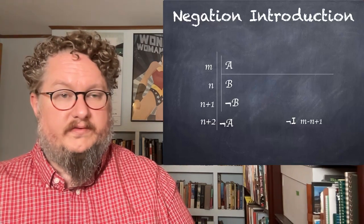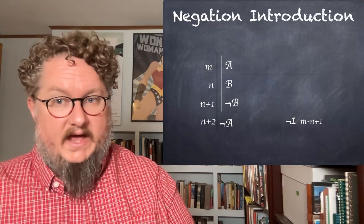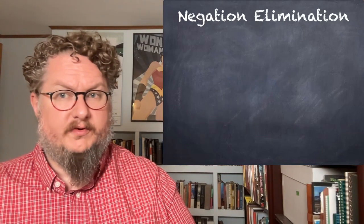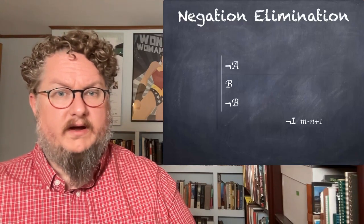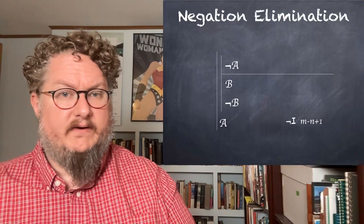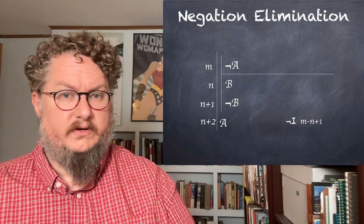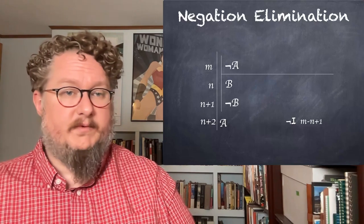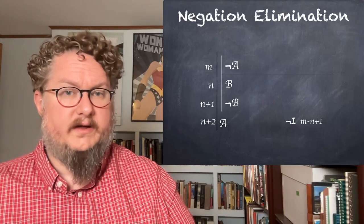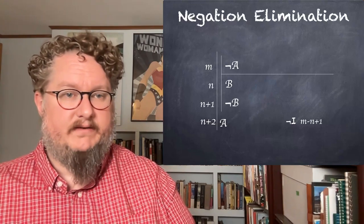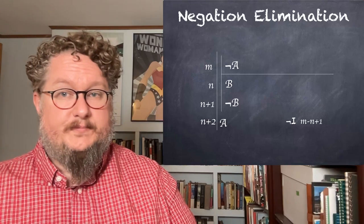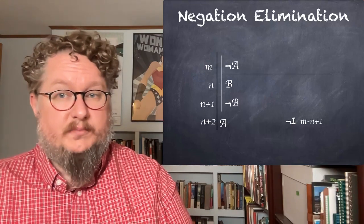This sort of indirect proof is often also known as proof by contradiction. Negation elimination is also a type of proof by contradiction, where instead of starting with A we start with not-A. We generate a contradiction, and this allows us to derive A. Here we are starting with the negation and getting the non-negated version of that same arbitrary sentence.